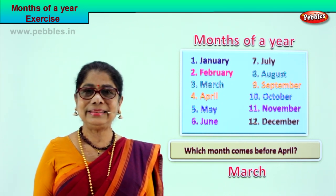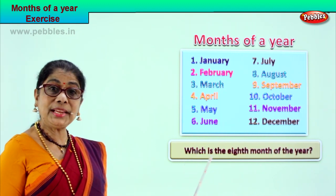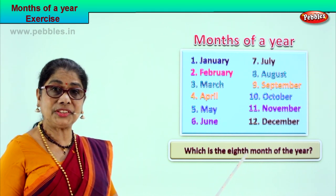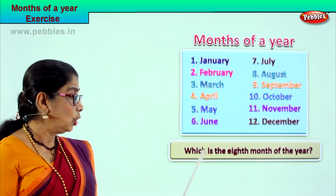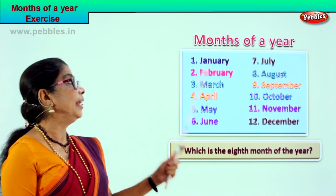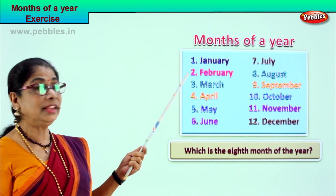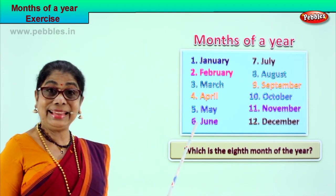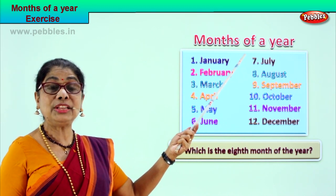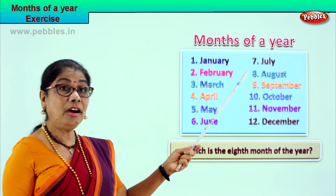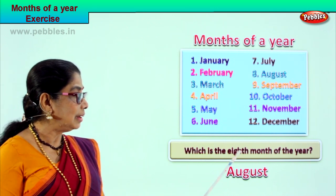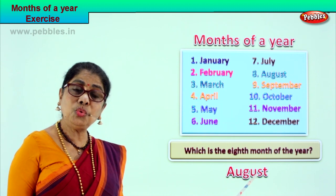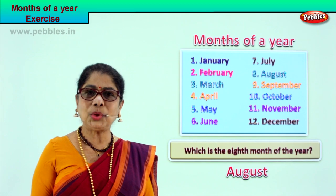Let's take another question: Which is the 8th month of the year? Spell 'eighth': E-I-G-H-T-H. We are supposed to find out which is the 8th month of the year. Look at the chart — January, February, March, April, May, June, July — and the 8th month is August. Which is the 8th month of the year? August. Spell August: A-U-G-U-S-T. August is the 8th month of the year. Did you enjoy the questions? Good.